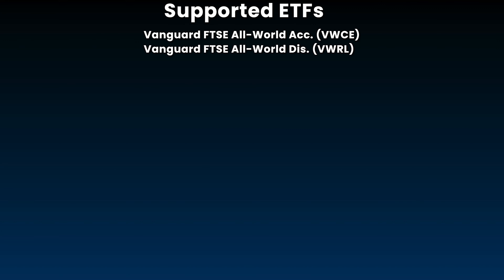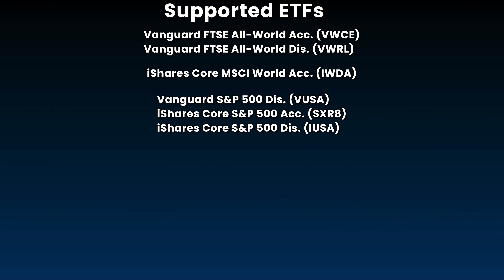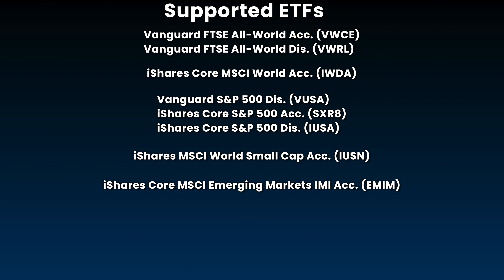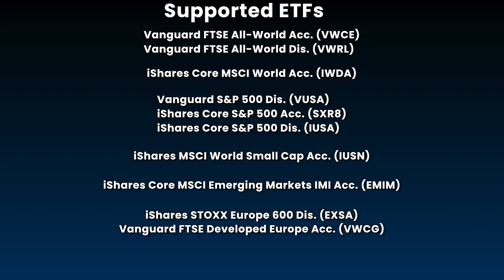My favorite, the Vanguard FTSE All-World in both the accumulating and distributing versions; the very popular accumulating iShares Core MSCI World; three of the best S&P 500 ETFs by Vanguard and iShares; the iShares MSCI World Small Cap; the accumulating iShares Core MSCI Emerging Markets IMI; the distributing iShares Stoxx Europe 600; the accumulating Vanguard FTSE Developed Europe; and the distributing Vanguard FTSE North America ETF. I think that's a pretty good start. Based on my interactions with you over the years, this should cover the majority of investors. They're adding more regularly, so the list will grow significantly over the coming months.